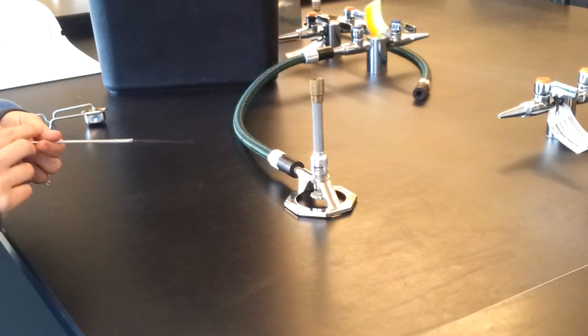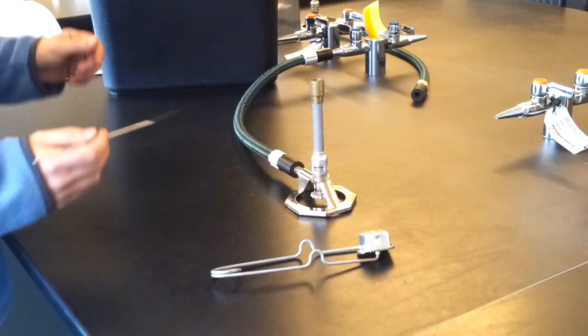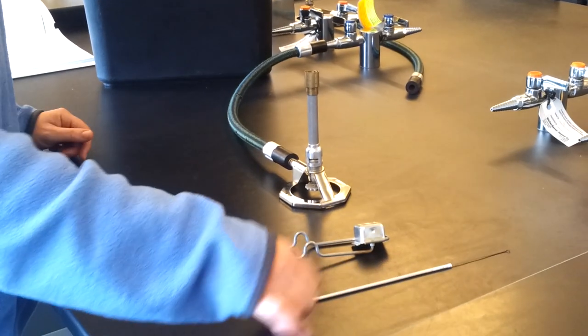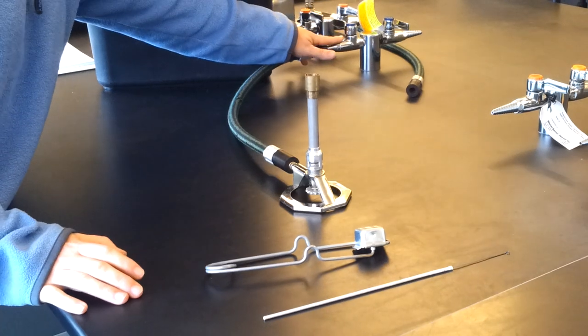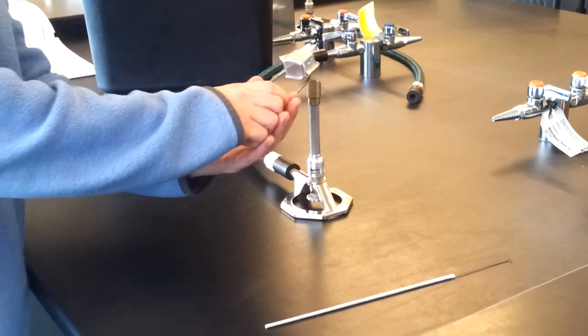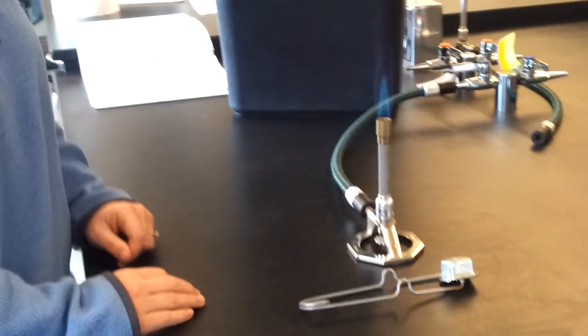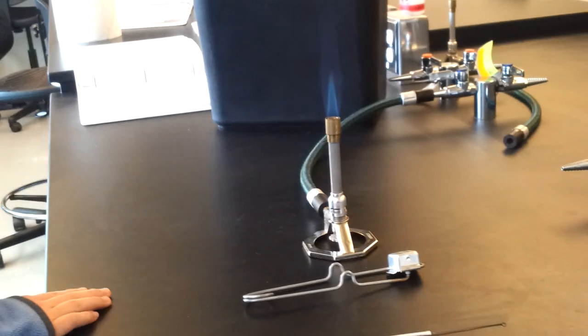Now, to turn on your Bunsen burner, you're going to need a striker. So I'm going to move this parallel so the gas is on, and then I'm going to strike over the top of the Bunsen burner, and that's actually a perfect flame right there already.